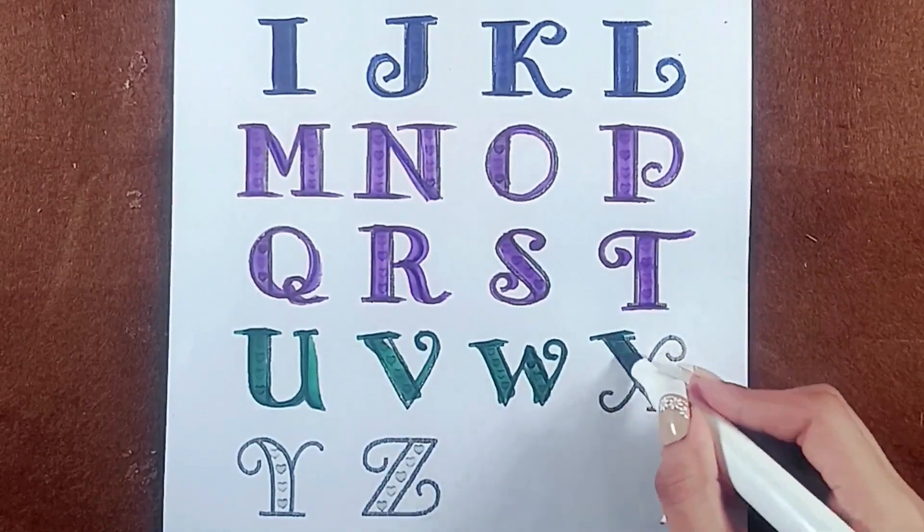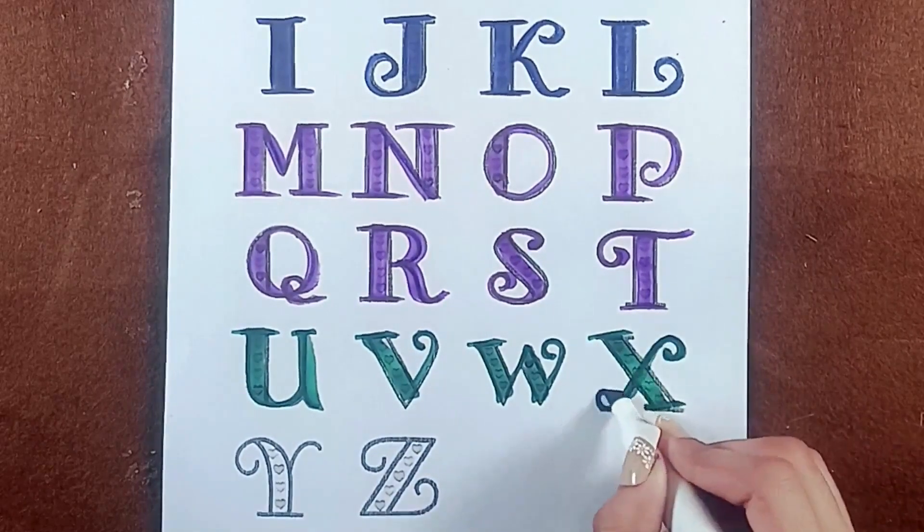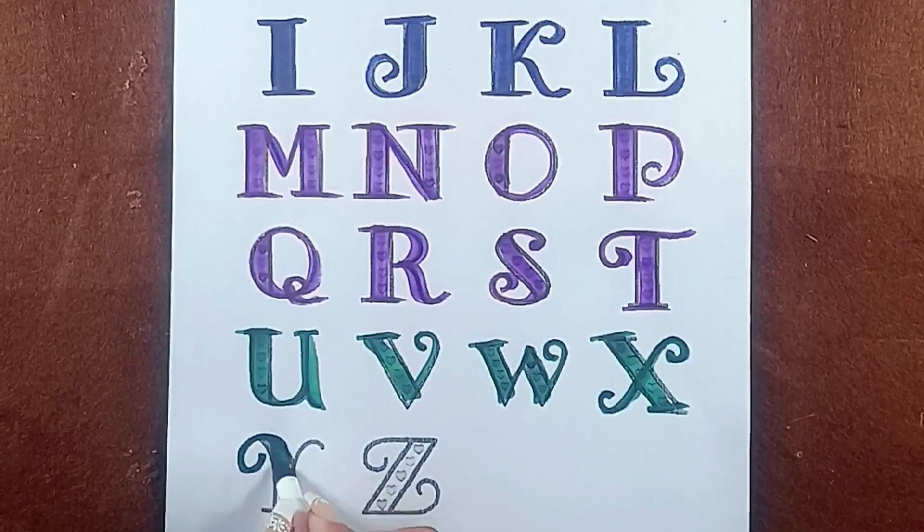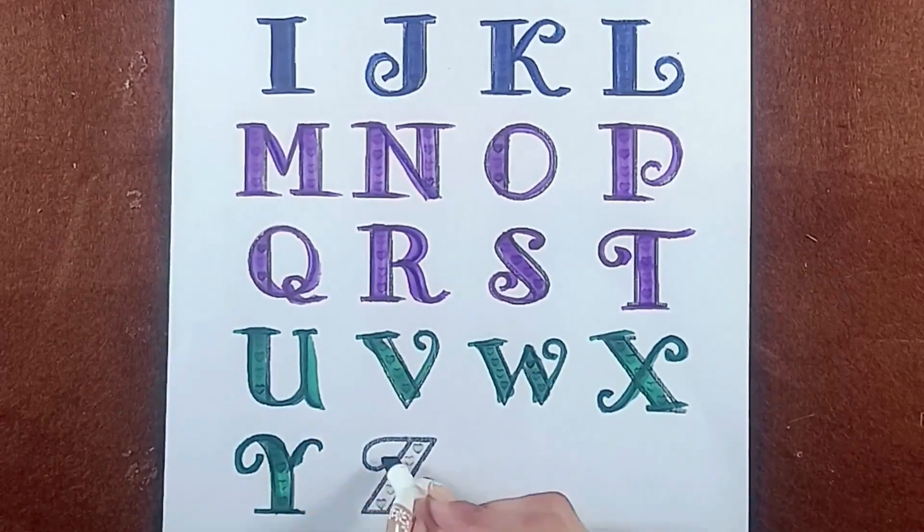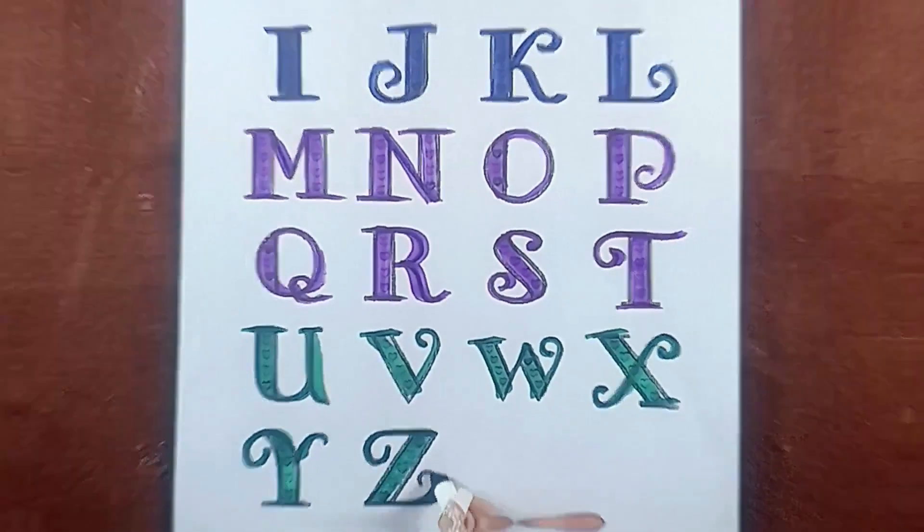X. X for eggs. Y. Y for york. Z. Z for zoo. Zuuu.